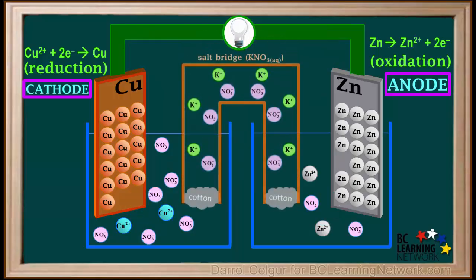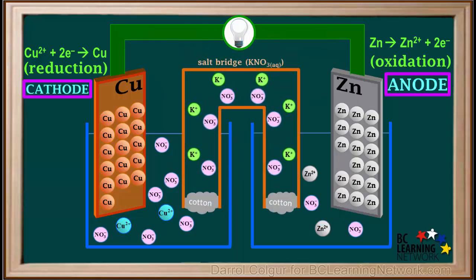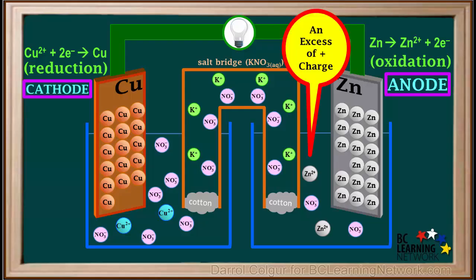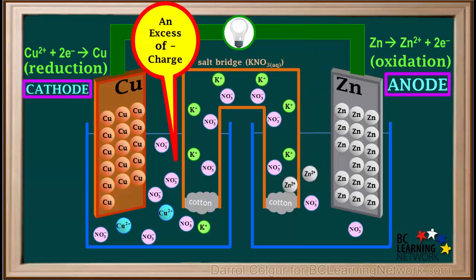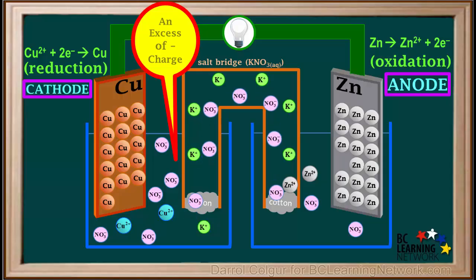We'll drop a salt bridge into this cell between the two beakers. Some of the excess positive charge in the solution around the anode would be relieved by a gradual migration of cations away from the anode toward the cathode through the salt bridge. Similarly, some of the excess negative charge in the solution around the cathode would be relieved by a gradual migration of anions away from the cathode toward the anode through the salt bridge.